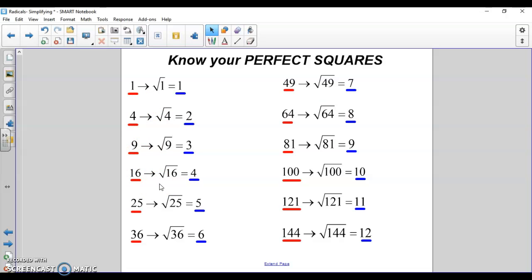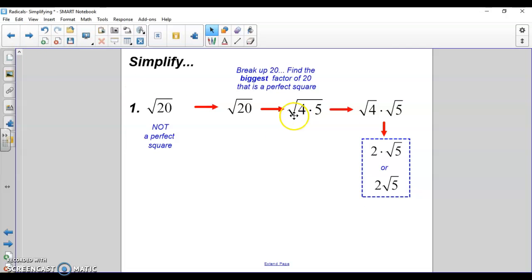So 4 is our perfect square. We split it up: 4 and 5. 4 times 5 is 20. Then we break it up into two radicals: square root of 4 times the square root of 5. Square root of 4 is 2. Square root of 5 is not a perfect square, so we leave it. That's 2 radical 5.